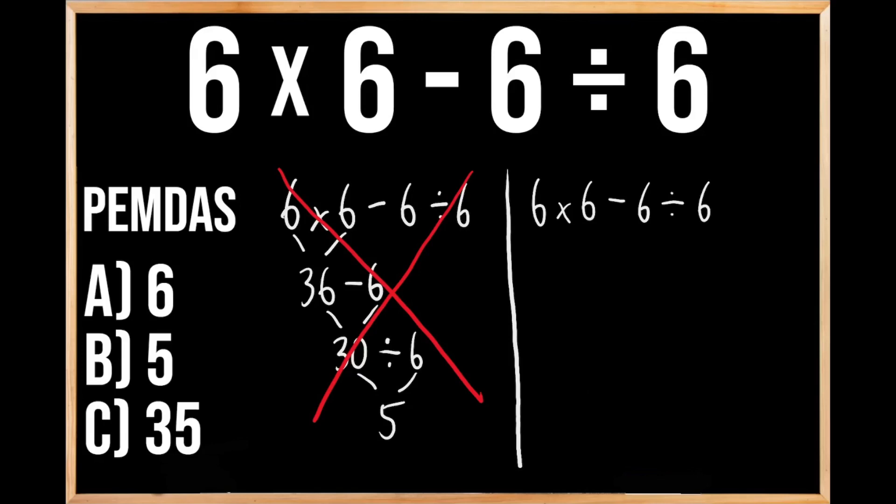So first, we're going to multiply 6 times 6, which we already know gives us 36, and then we're going to bring down the rest of this problem. So we have minus 6 divided by 6. Now we're going to work through our division. So we're going to divide 6 by 6, which we know is going to give us 1, and then we're going to bring down the rest of the problem. So we have 36 minus 1.